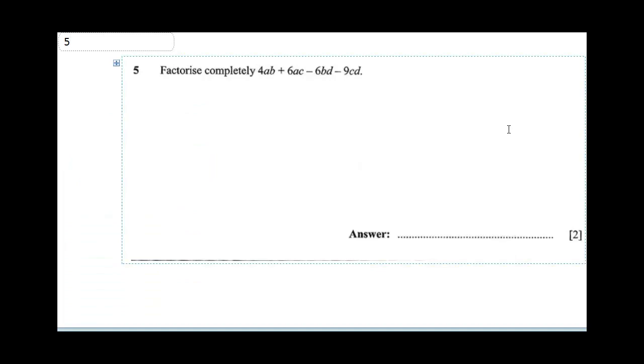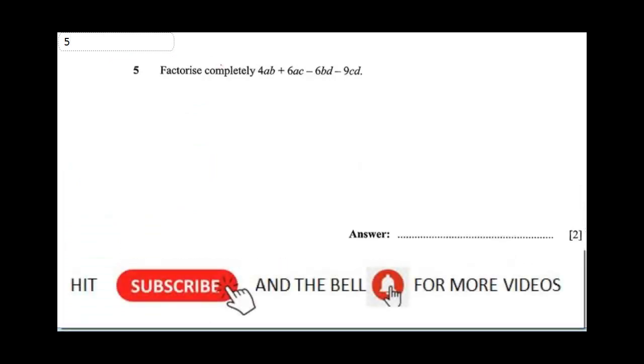Question 5 says factorize completely the equation you're seeing. So for us to do this, I'm going to say 4ab + 6ac - 6bd - 9cd. Now, what is common here? 2a is common. So you bring 2a out. You have 2a(2b + 3c).